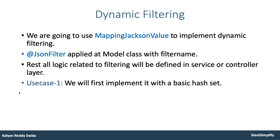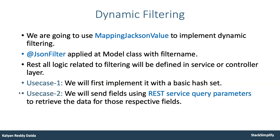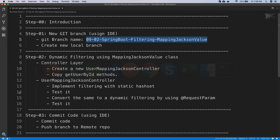Our use case one is to first implement it with a basic HashSet — we will create a filter with a set of values using a basic HashSet. Once that is completed and tested, we will move on to creating a service where we send a set of parameters and only those parameter data will be retrieved. That's what we are going to test using MappingJacksonValue.